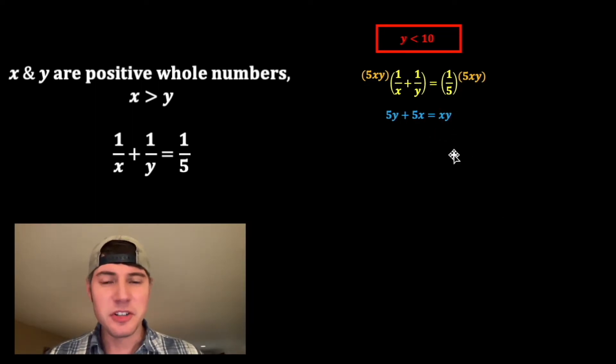So from here, I wanna set all this equal to zero. So I'm gonna subtract xy from both sides. On the right-hand side, xy minus xy is zero. On the left-hand side, we just have these three terms, 5y plus 5x minus xy.